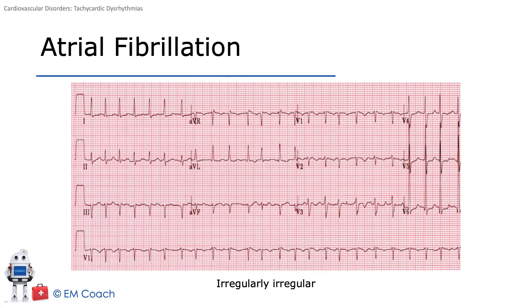Atrial fibrillation. Afib is so common. It's associated with increasing age, hypertension, ischemic or valvular disease, cardiomyopathy, hyperthyroid intoxication, PE, or it can often be idiopathic.